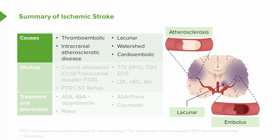Lacunar strokes are small vessel strokes. A lacune is an island, and this is an island of stroke deep in the brain, often in the subcortical gray matter or sometimes white matter tracts. These small strokes form on small blood vessels — the perforators. We think about the thalamostriate perforators and other small vessels in and around the brain that can lead to lacunar strokes. Long-standing hypertension is an important risk factor.